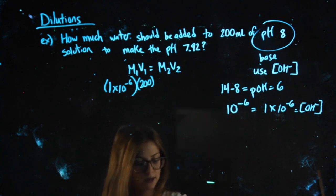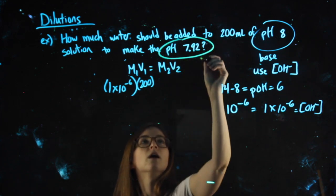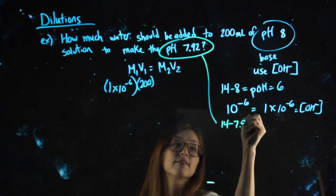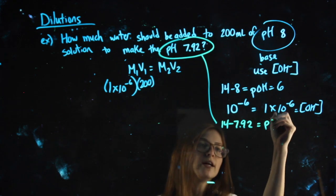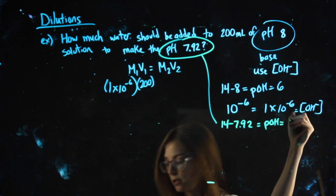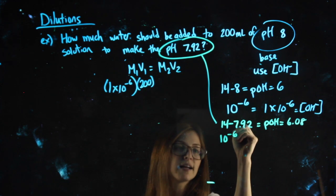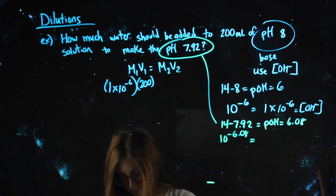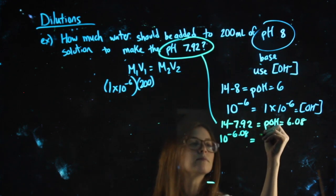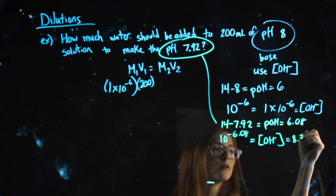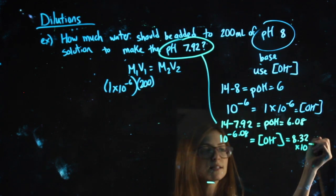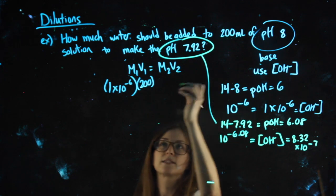Now my other pH, I need to do the same thing for. 14 minus 7.92 gets me 6.08 as my pOH. So 10 to the negative 6.08 gets me my OH- concentration to be 8.32 times 10 to the negative 7. That's my M2.